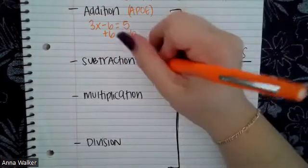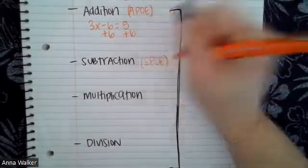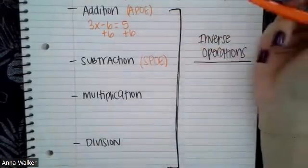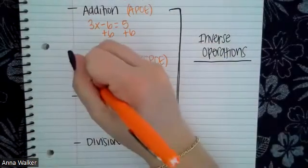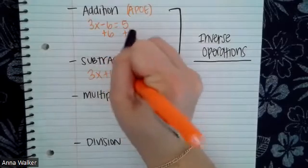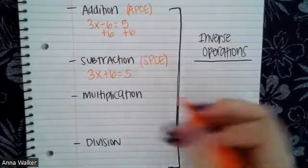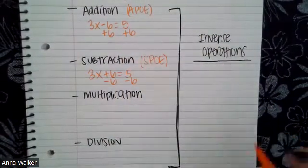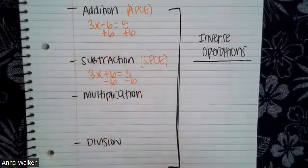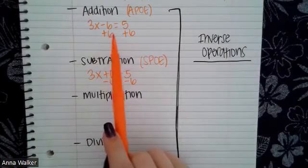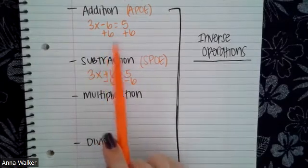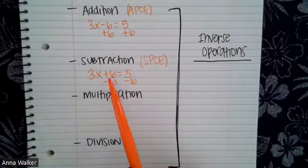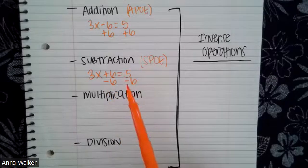The subtraction property of equality, or SPO, is very similar to the addition property of equality, but instead of adding something to both sides, we subtract. For example, if I had the equation 3x plus 6 equals 5, the subtraction property of equality says I could subtract something from both sides. Depending on what the equation is, that determines which property of equality we use. If we're subtracting in an equation, we use the addition property of equality. If we're adding in an equation, we use the subtraction property of equality.